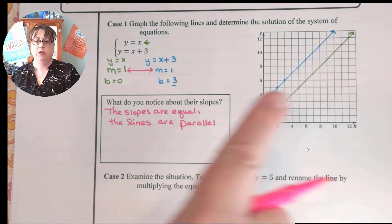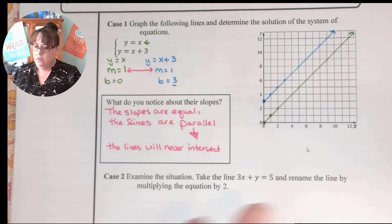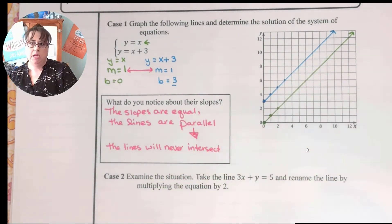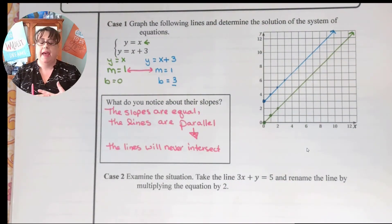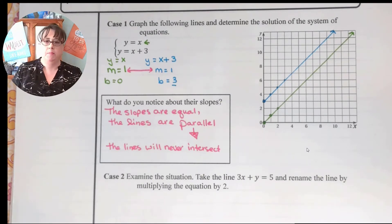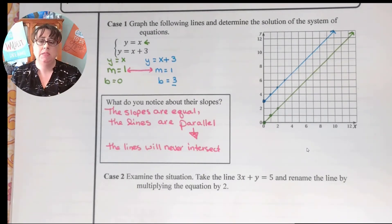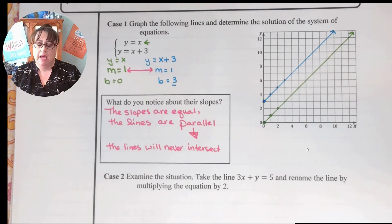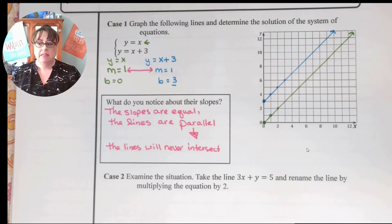Now we look at the lines. If you look at the lines, the lines are not going to intersect. By the definition of parallel and also by looking at our picture, we can see that the lines are not going to intersect. We know that the solution of a system means the point where they intersect. Well, if these are parallel lines and they're never going to intersect, that means there's never going to be a point where they intersect, which means that parallel lines don't have a solution.